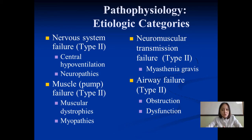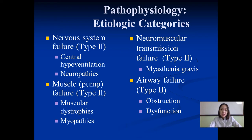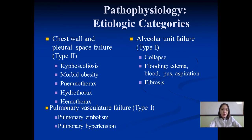The pathophysiology of respiratory failure involves several etiology categories. Nervous system failure (Type 2): central hyperventilation, neuropathies. Muscle pump failure (Type 2): muscular dystrophies, myopathies. Neuromuscular transmission failure (Type 2): myasthenia gravis. Airway failure: obstruction or dysfunction. Chest wall and pleural space failure: disorders of the chest wall. Pulmonary vasculature failure (Type 1). Alveolar unit failure (Type 1): collapse, flooding, edema, blood, aspiration, and fibrosis.